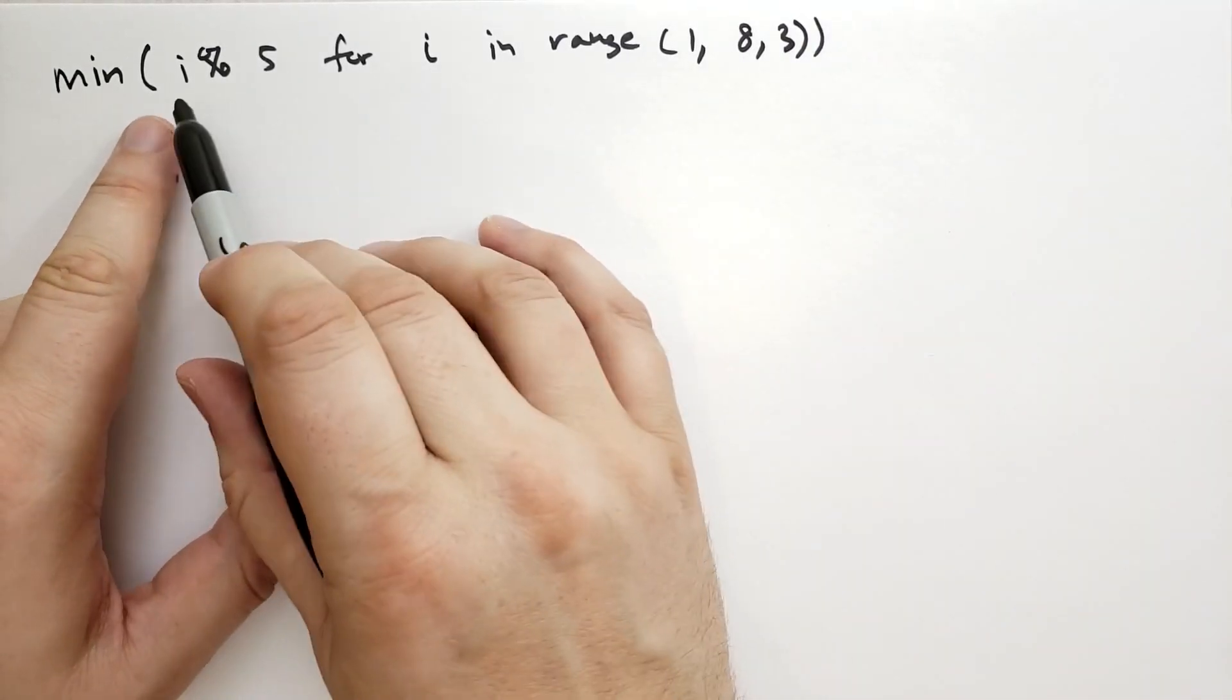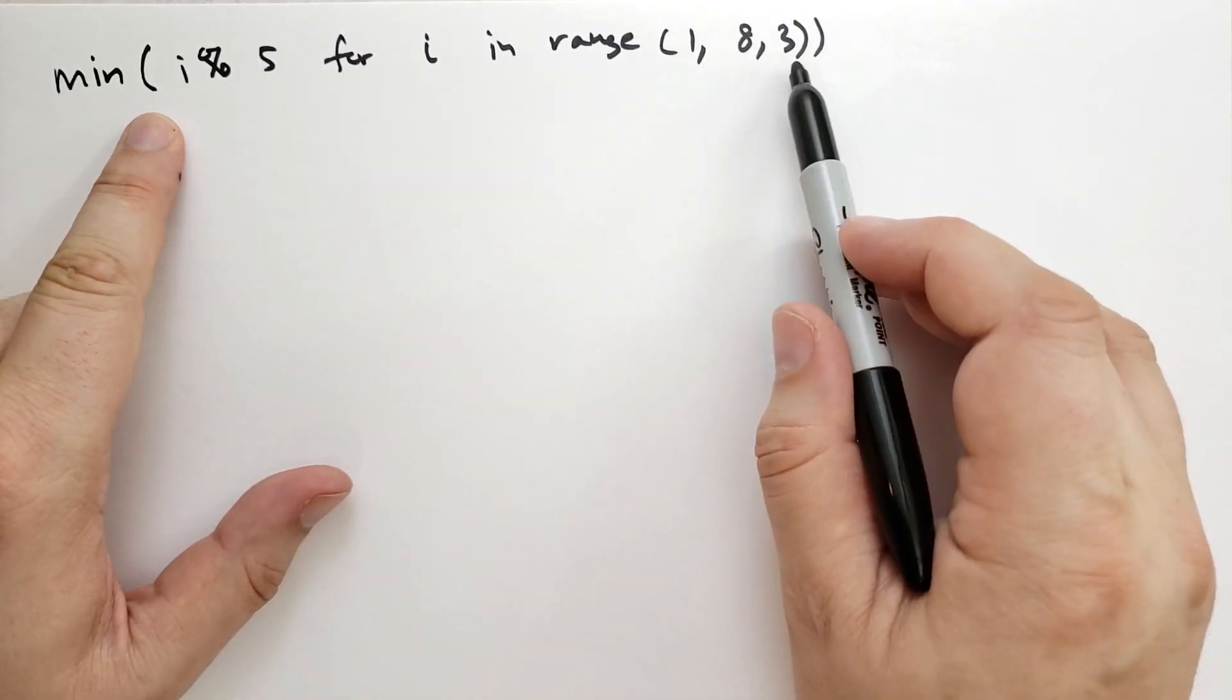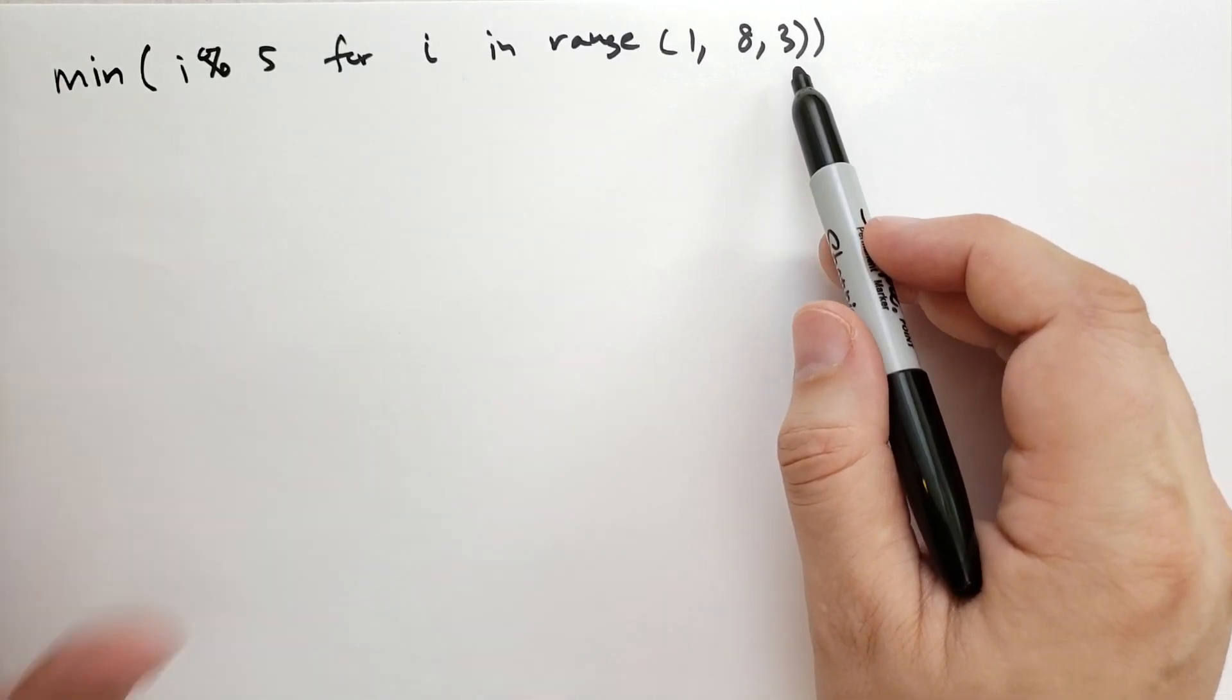And so what this will do is it will generate the sequence that comes from this, and then pass that as the iterable into the minimum function.